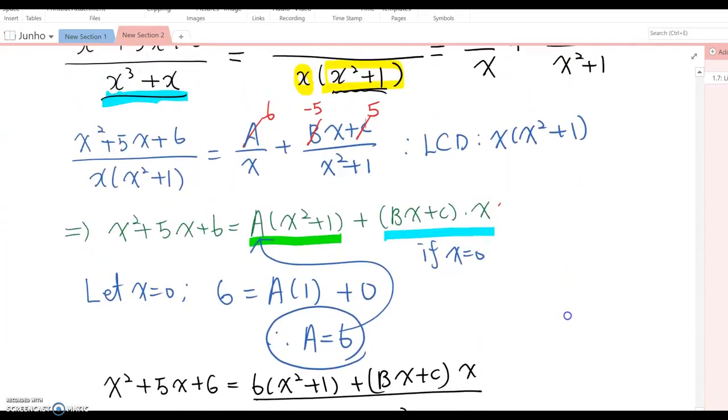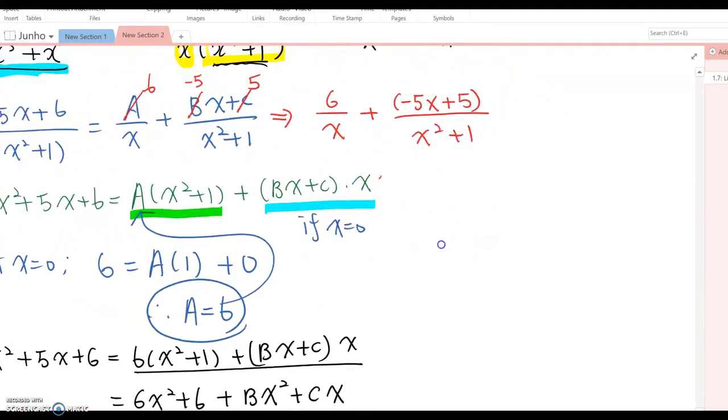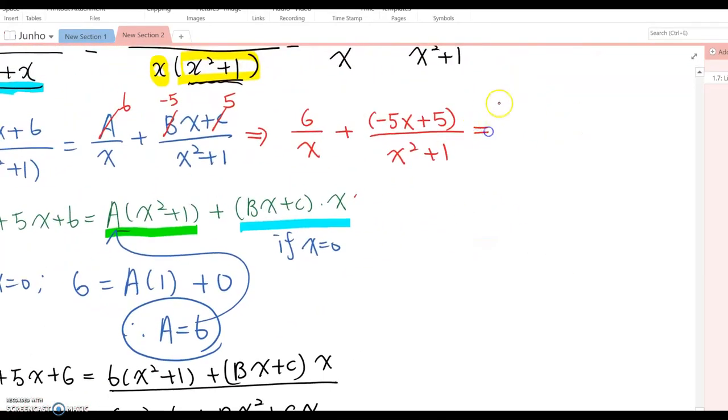Let me double check. Therefore, this decomposed function becomes 6 over x plus negative 5x plus 5 over x squared plus 1. That will be the answer. But if you want the leading term to be positive sign, then you can also rewrite that as 6 over x minus 5x minus 5 over x squared plus 1. That also can be the answer as well.